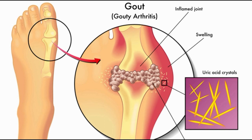Joint pain develops for various reasons. Osteoarthritis occurs when the cartilage between bones breaks down, allowing bones to rub against each other. Rheumatoid arthritis results from the body mistakenly attacking the joints. It is important to know there are various types of arthritis so you can address each form specifically and properly.